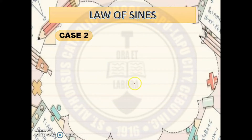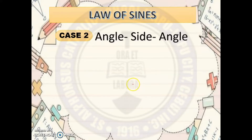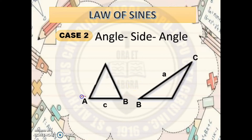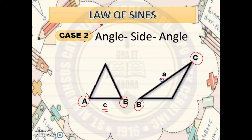Case 2. For Case 2, the given is classified as angle-side-angle. If the given has two angles and one side, but that side is in between these angles, then this belongs to Case 2. For Case 2, we will use the Law of Sines as well. On the given illustration, you can see two angles and one side. It is important that you know what type of given it is so you know what law to use.